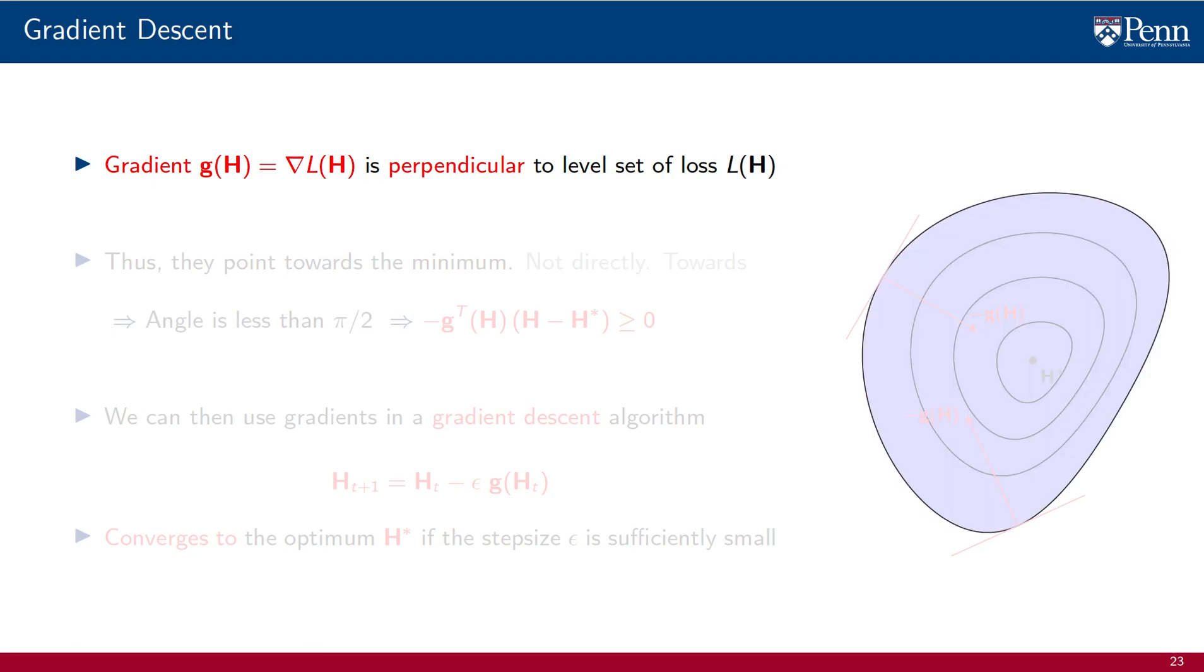In this illustration, we have some level sets of a loss function, along with a gradient g of h, which is, as we have said, perpendicular to the level set. The gradient is the rate of change and points outwards of the level set. We depict the negative gradient, which points inwards.